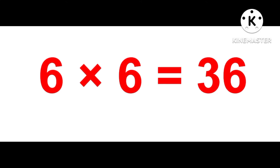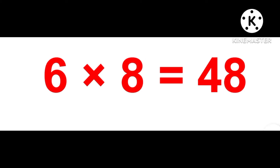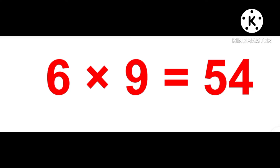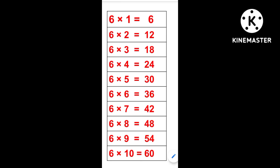6 sixes are 36. 6 sevens are 42. 6 eights are 48. 6 nines are 54. 6 tens are 60. Repeat again: 6 ones are 6.